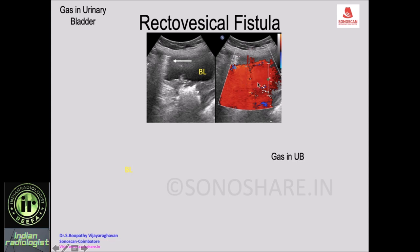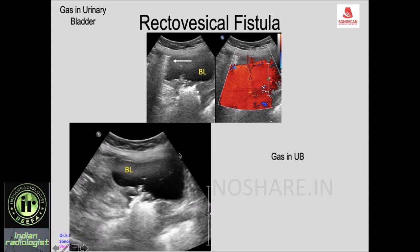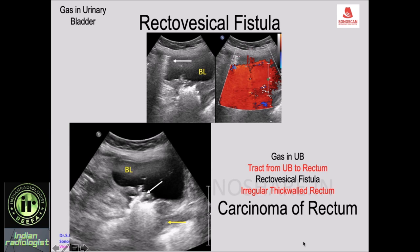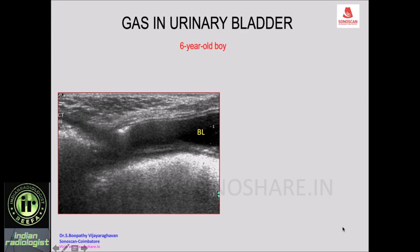Here again there is gas in the urinary bladder with the explosion sign and a tract from the bladder to the rectum, indicating a rectovesical fistula. On close inspection there is irregular thickening of the wall of the rectum — carcinoma of the rectum — which has infiltrated the posterior wall of the urinary bladder with a tract and escape of gas into the urinary bladder. This is a rectovesical fistula due to carcinoma of the rectum.